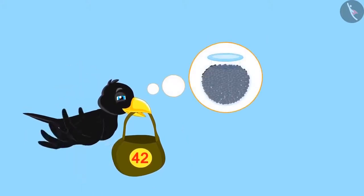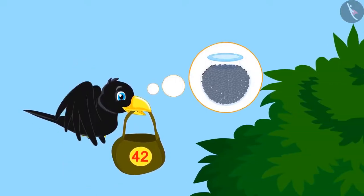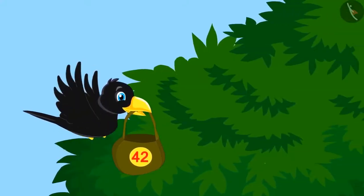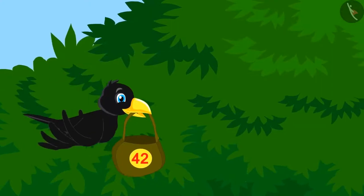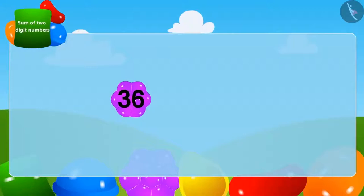He was wondering if he now had enough stones. Come on, let us find out how many stones does he now have in total. The crow had a total of 36 stones to which he will add 42 stones given by Appu.